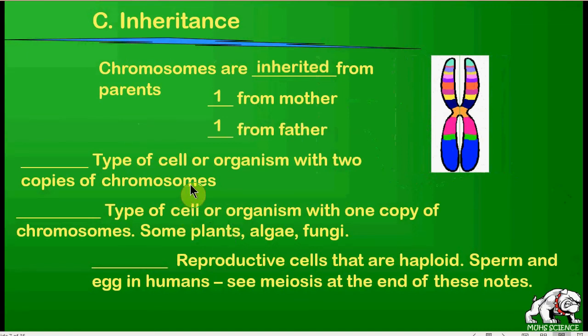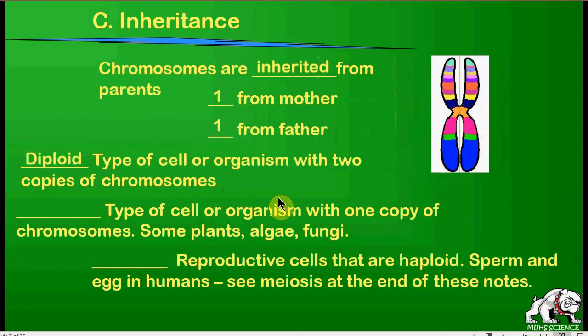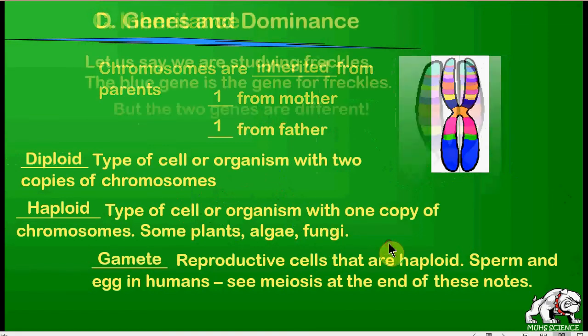Cells that contain two copies of chromosomes — a copy on the left and a copy on the right — are called diploid cells. Cells that contain one copy, like egg and sperm cells, are called haploid cells. The gametes — sperm and egg — are haploid cells that fuse into the zygote, from which you get your genetic information.